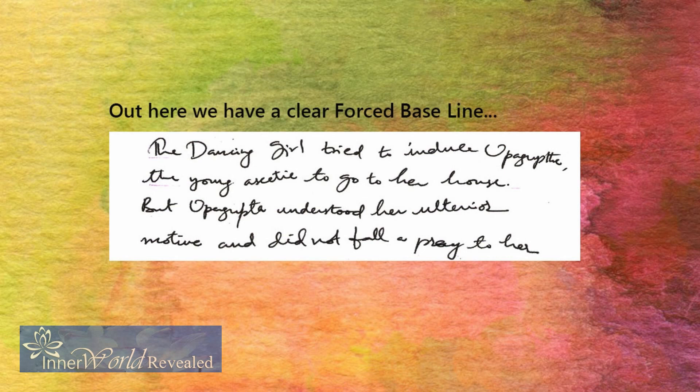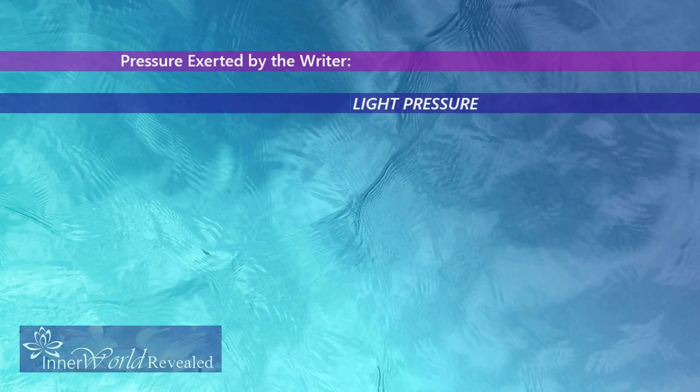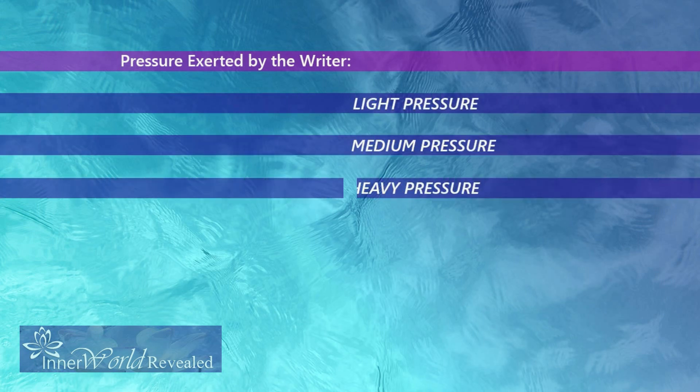Their mind is always fluctuating, which makes them hard to get to know. However, we must not jump to conclusions just by analyzing the baseline — all aspects of a person's handwriting must be analyzed together. The next aspect I'm going to talk about is the pressure that a writer exerts while writing. The writer can be putting light pressure, medium pressure, or heavy pressure while writing.